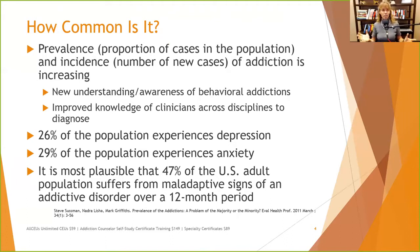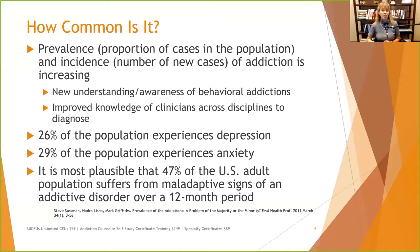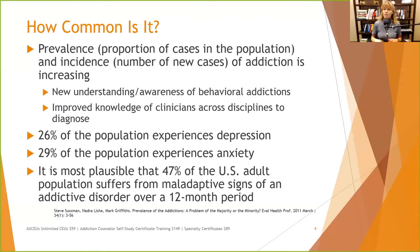A meta-analysis of research found that it was most plausible that 47% of the U.S. adult population suffers from maladaptive signs of an addictive disorder in any 12-month period — that's almost one in two. When we talk about maladaptive signs, it doesn't necessarily mean substance dependence, but it can mean experiencing negative consequences, like someone gambling or shopping a little too much to escape and starting to experience negative consequences. It's important to understand how prevalent this is in the general population.